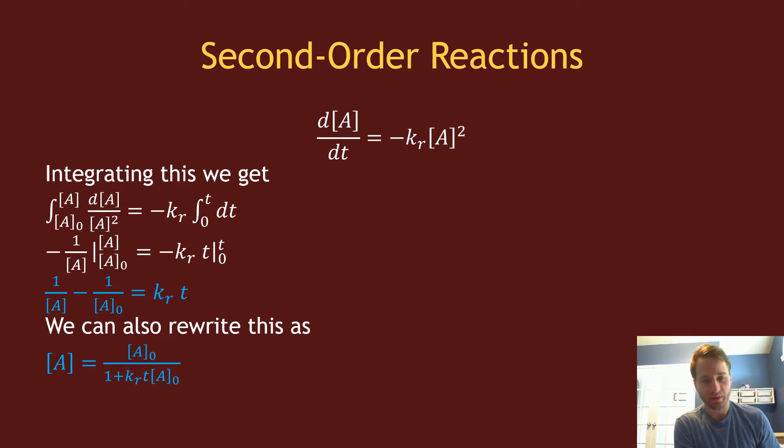When you integrate from some initial time zero to time t, which has some initial concentration and some final concentration, solving for all of that, we get this equation: one over the concentration of A equals kt plus one over the initial concentration. It has that form y equals mx plus b, where the slope is your rate constant and the y-intercept is one over [A]₀.